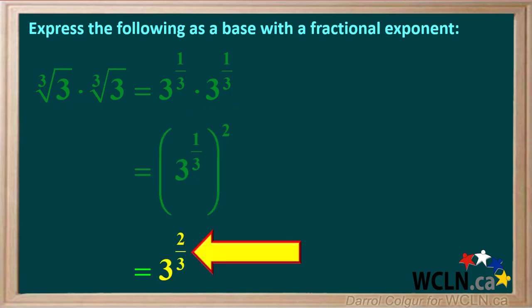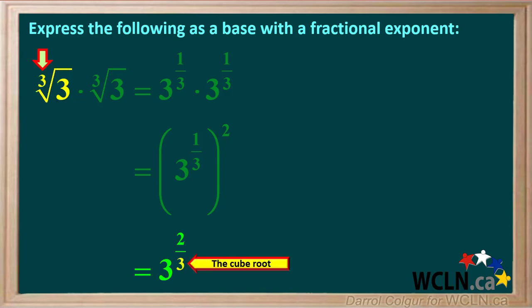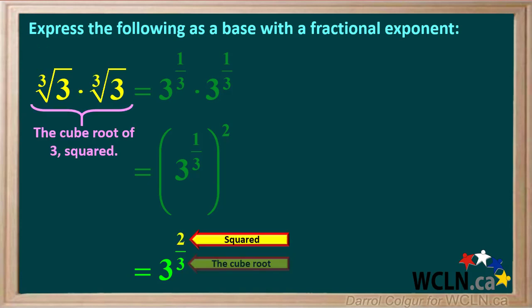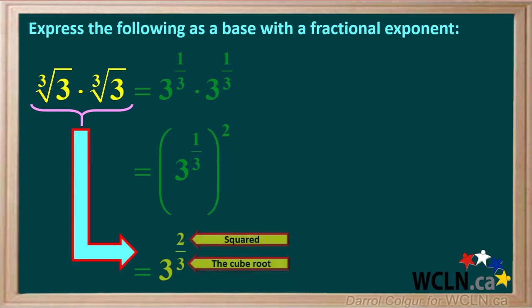Multiplying 1 third times 2 gives the exponent 2 over 3, so we're left with the expression 3 to the power of 2 over 3, where the big 3 is the base. The 3 in the denominator of the exponent means the cube root of 3, and the 2 in the numerator of the exponent means we're squaring the cube root of 3. So to summarize, the cube root of 3 times the cube root of 3 is 3 to the power of 2 thirds.